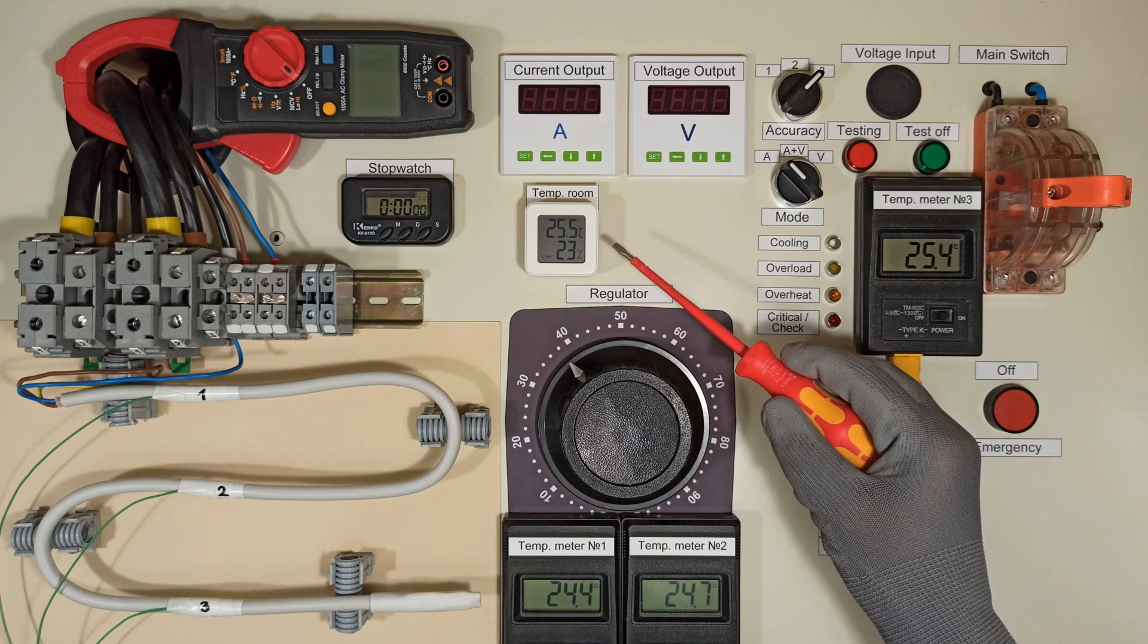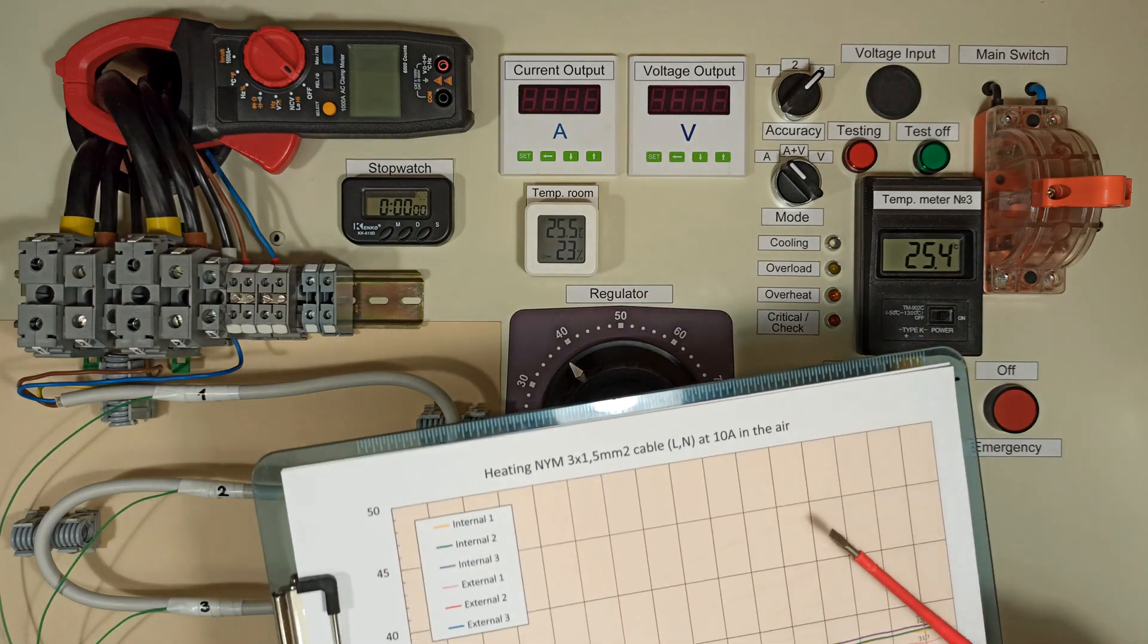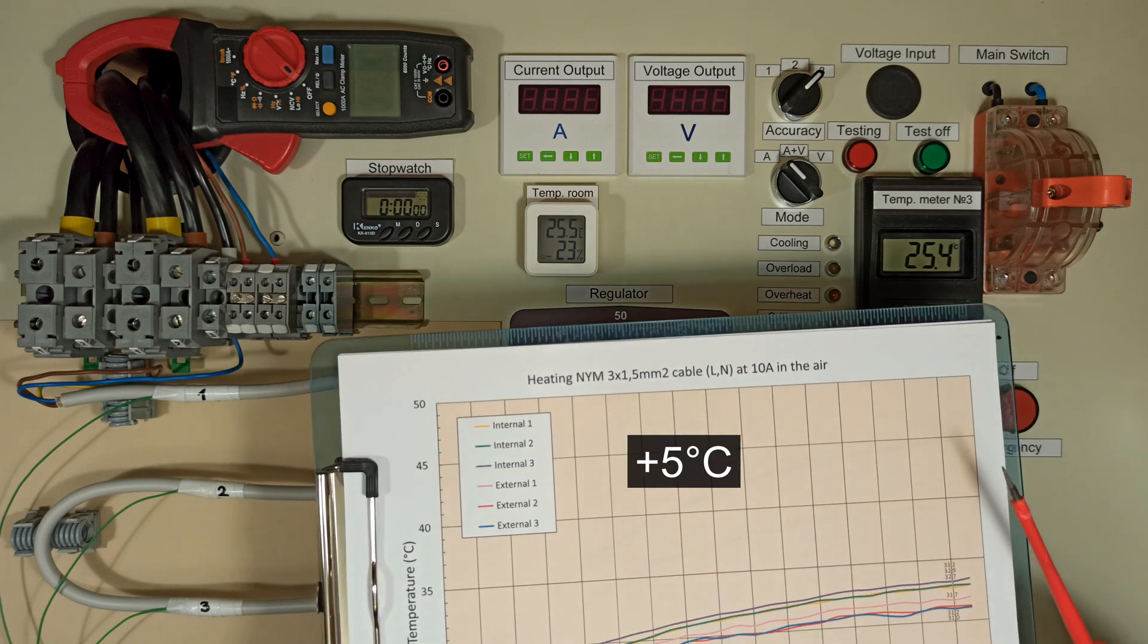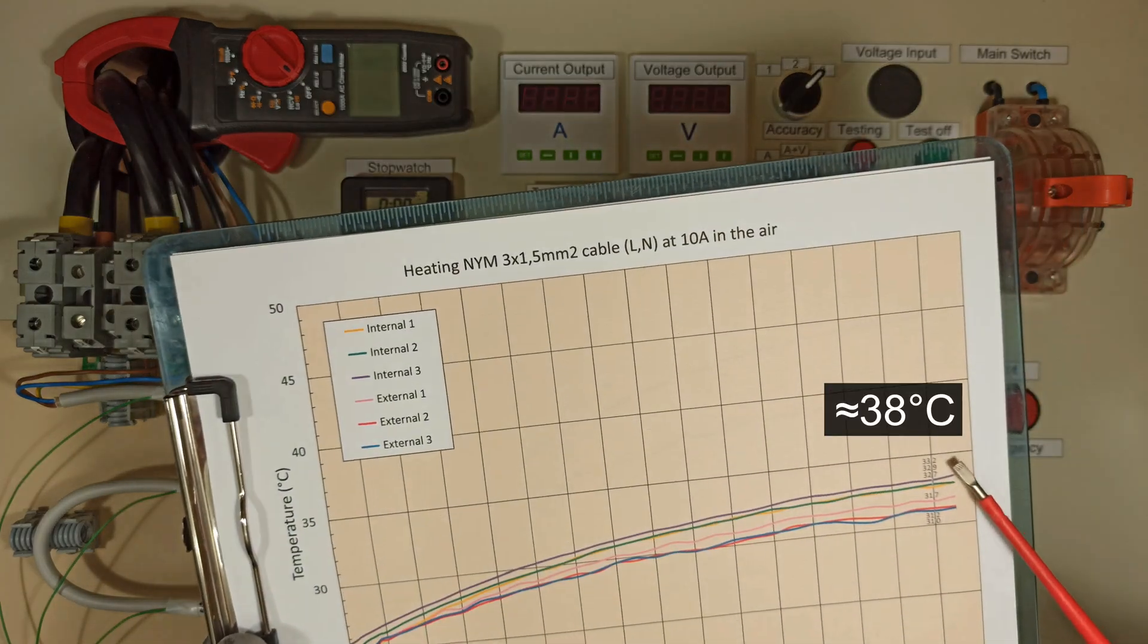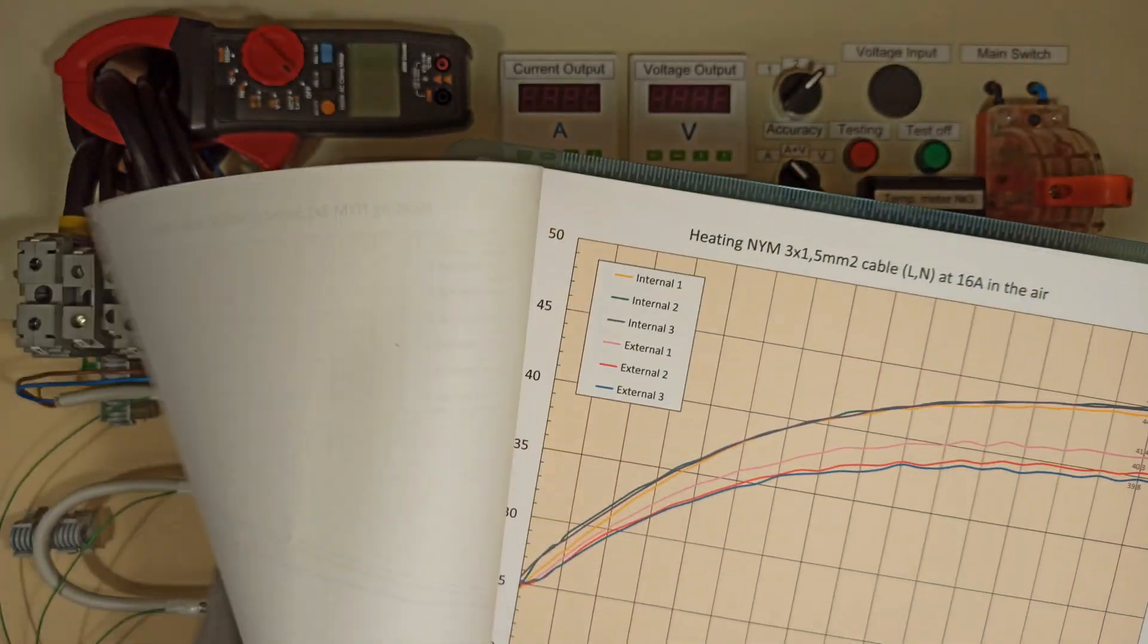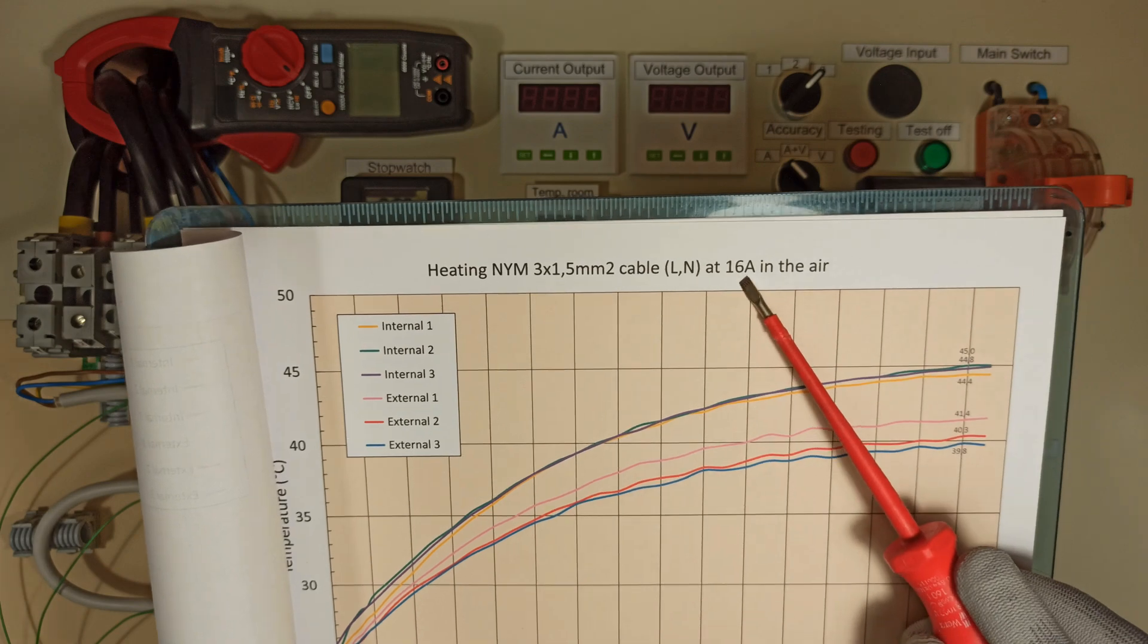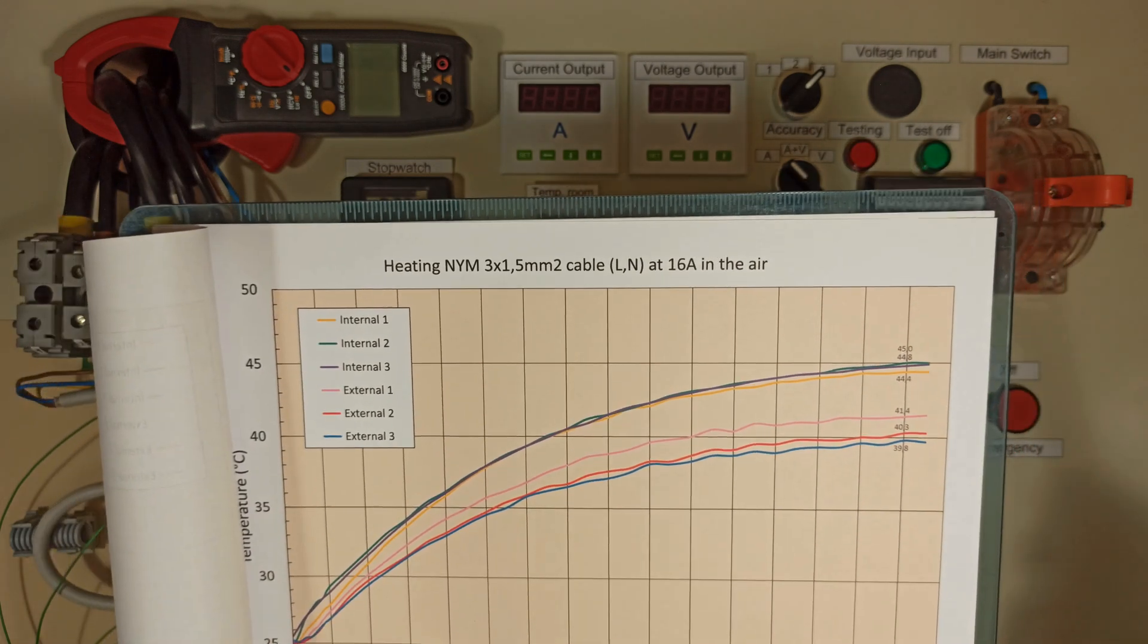Note that the room temperature is around 25 degrees. At 30 degrees, I think the temperatures would be about 5 degrees higher. So, at 10 amps, it would be 38 degrees, and at 16 amps, it would be around 50 degrees. A good result.